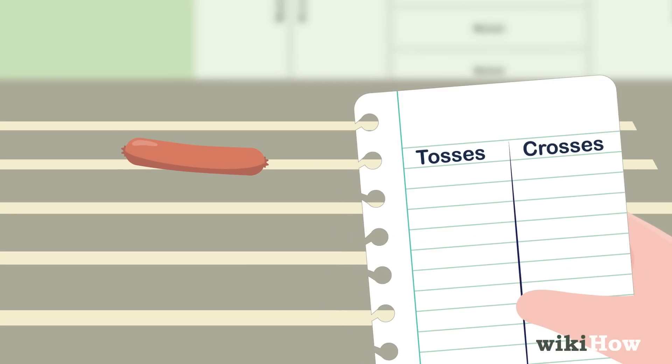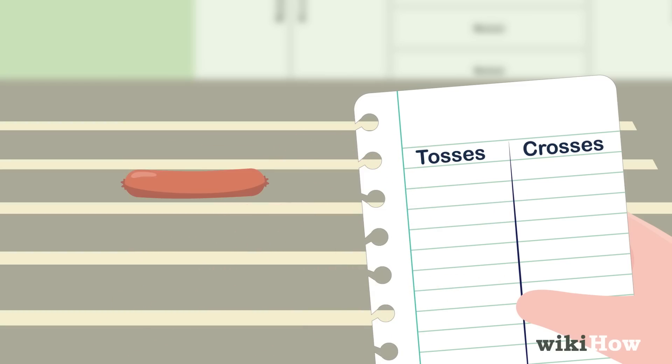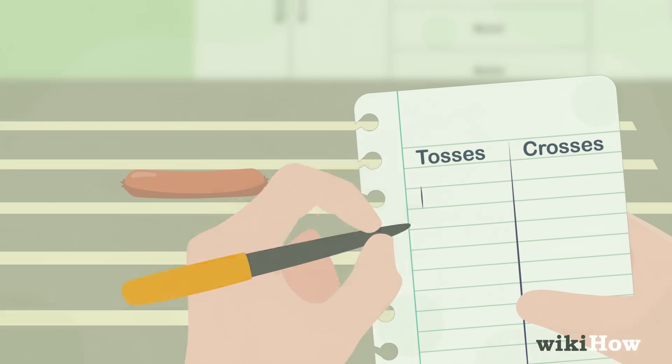If it is, put a tick under crosses and a tick under tosses. If it isn't, just put a tick under tosses.